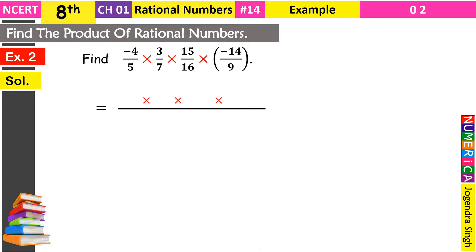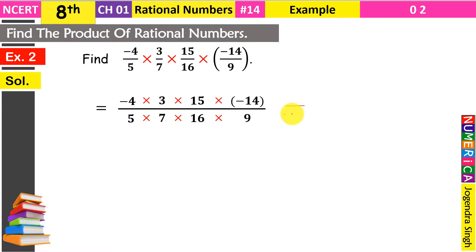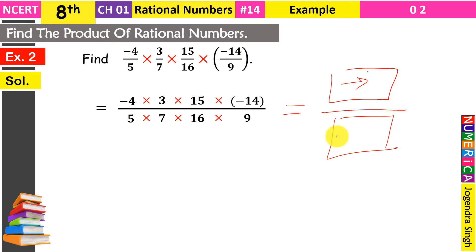Numerators जितने भी हैं उनको एक-एक करके carry करते हैं: first numerator minus 4, second है 3, उसके बाद 15, और last में minus 14। Same thing denominator में करनी है — सारे multiply के signs carry करो, और denominators एक-एक करके: 5, फिर 7, उसके बाद 16, और last में 9। According to our method, numerator को multiply करके ऊपर और denominator को multiply करके नीचे लिख देंगे।